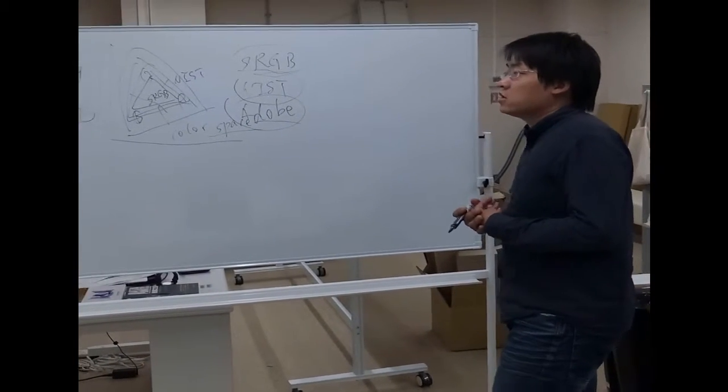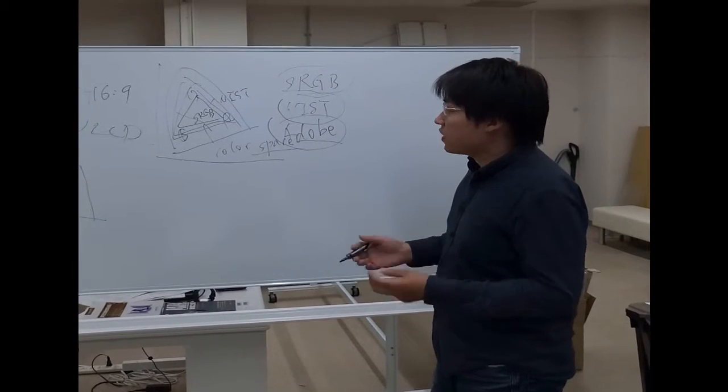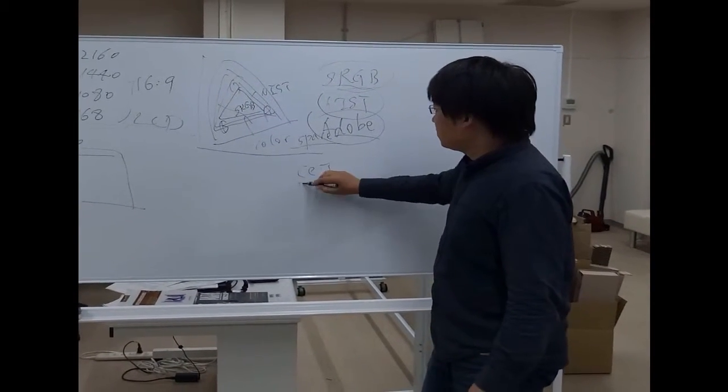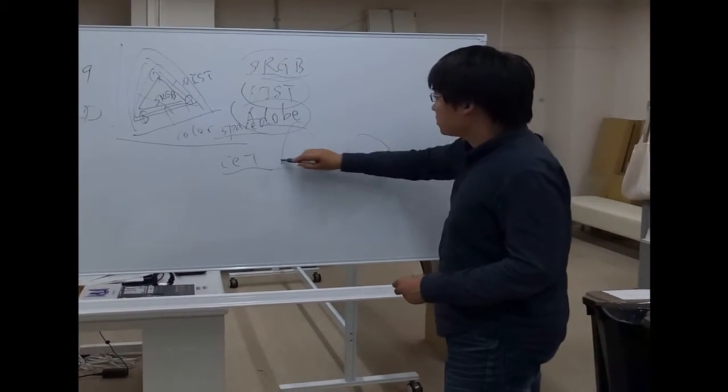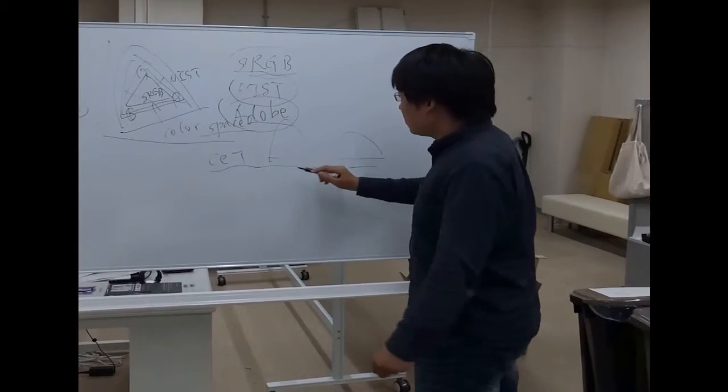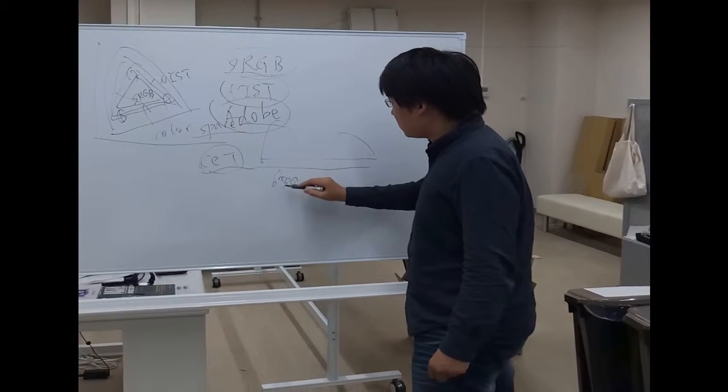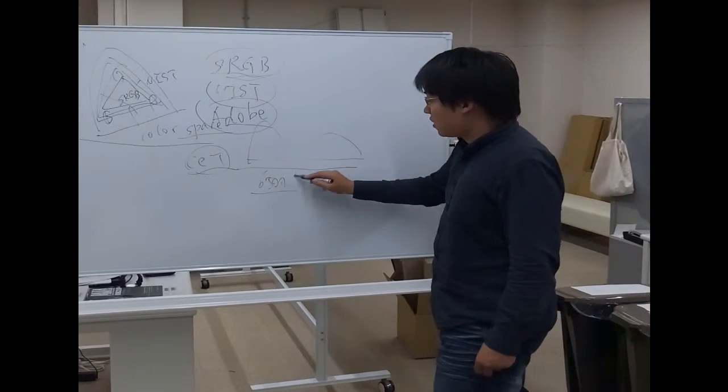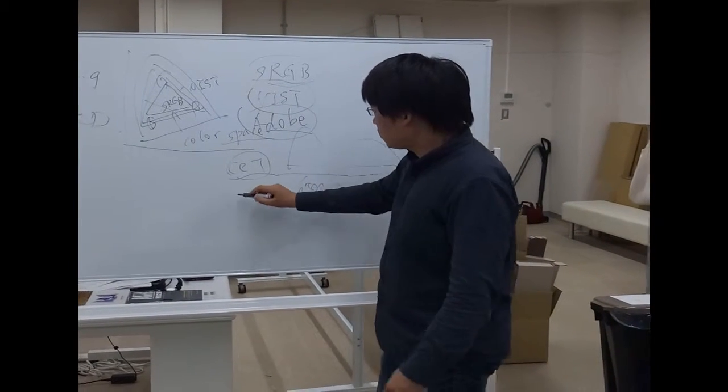And we may know about another kind of idea like CCT, the color temperature. The color temperature is in the spectrum what the color shows. Normal color temperature is about 6500 Kelvin.